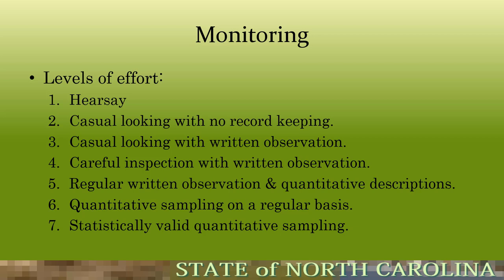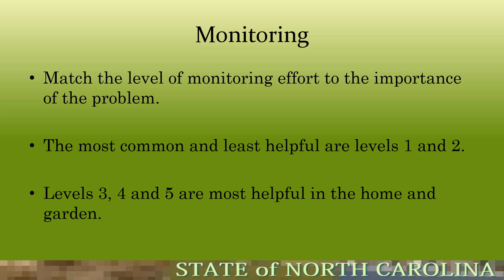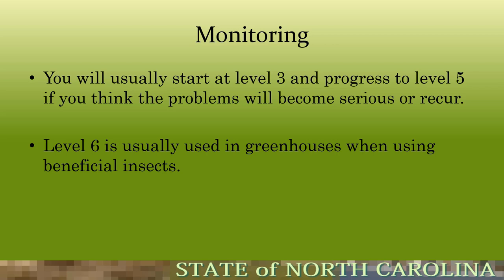There are levels of monitoring effort: hearsay, casual looking with no record keeping, casual looking with written observation, careful inspection with written observation, regular written observation with quantitative descriptions, quantitative sampling on a regular basis, and statistically valid quantitative sampling. Levels three, four, and five are the most helpful for home and garden settings. Level six is typically used in greenhouses when using beneficial insects. Start at level three and progress to level five if the problem looks serious or recurring.